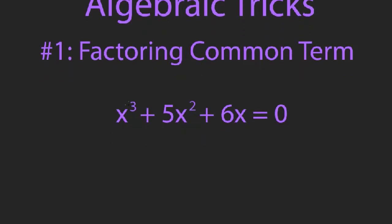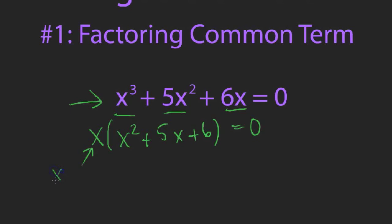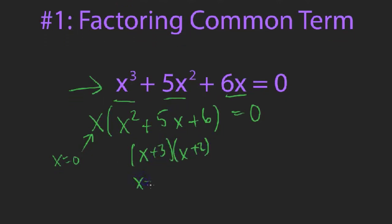The first trick is factoring out the common term. Here's a cubic polynomial — it looks unsolvable without a cubic formula, but notice there's an X in every term. Factor it out to get X times (x² + 5x + 6) = 0. By the zero product property, solutions are X = 0 and wherever the quadratic equals zero. Factoring the quadratic gives (x + 3)(x + 2), so solutions are X = 0, X = -3, and X = -2.